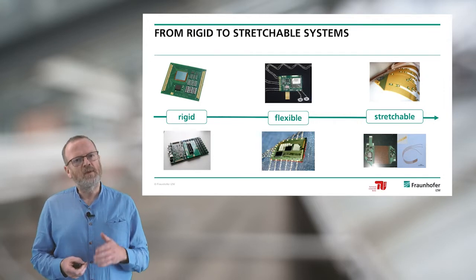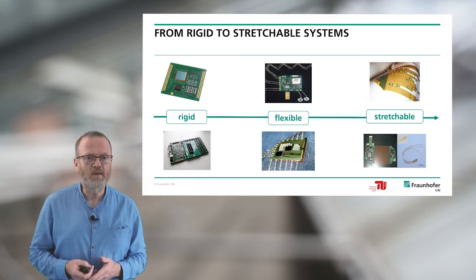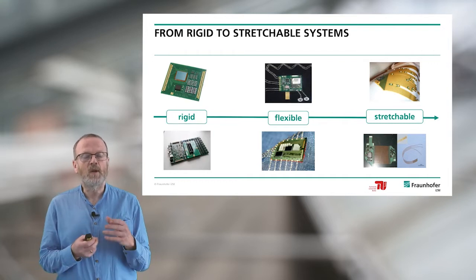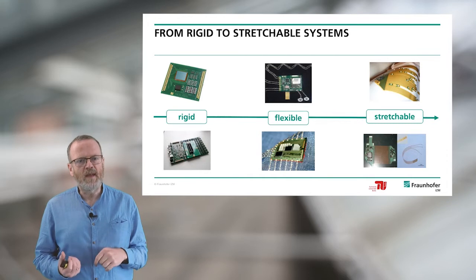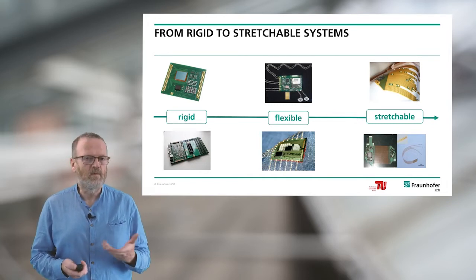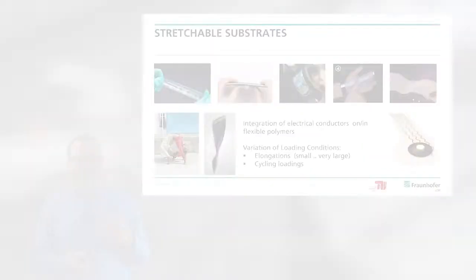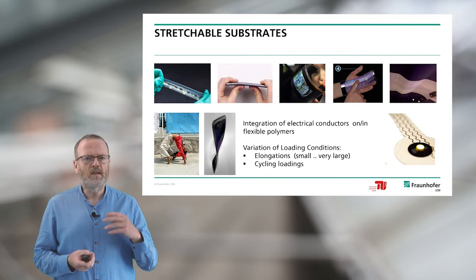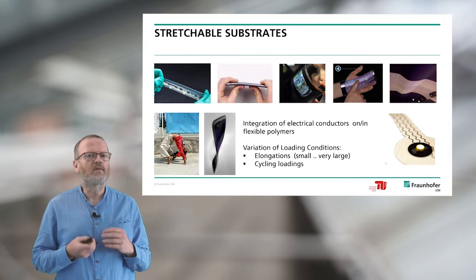We can divide the substrate into two different kinds. On the left side you see the rigid, which is a very classical FR4 material. In the middle you have a flexible that can be used for textiles, and on the right side you can see the stretchable. The challenge for these materials is we have a combination of two different materials: stretchable polymer on one hand, and metal conductive materials like copper on the other hand.